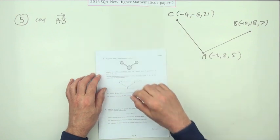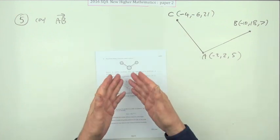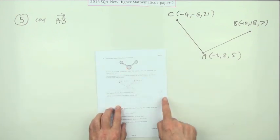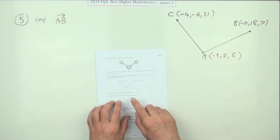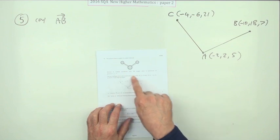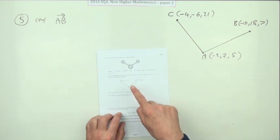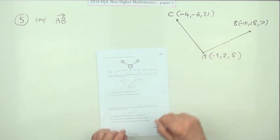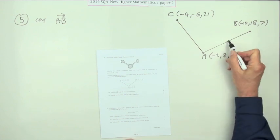So number five from paper two of the 2016 New Higher. The angle between two vectors, only six marks this time. There's a bit of a spiel to begin with which you can just ignore because it's quite clearly expressed here. Here's the two vectors and there's the angle you want between them.